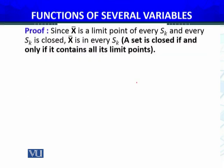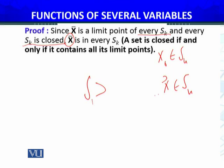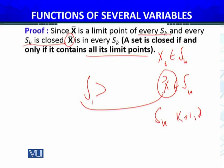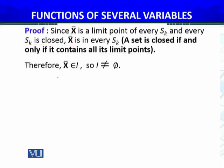This sequence is convergent and it converges to some X-bar। Now, X-bar belongs to every SK — since X-bar is a limit point of every SK, क्यूंकि XR जो था वो belongs to SK था, और यह SK जितने भी अगले sets हैं वो सब इसमें contained हैं। And every SK is closed — तो X-bar जो है वो हर SK में belong करेगा। A set is closed if and only if it contains all its limit points — and all SK are closed sets — therefore X-bar belongs to the intersection I = ∩(K=1 to ∞) SK। So I is not empty।